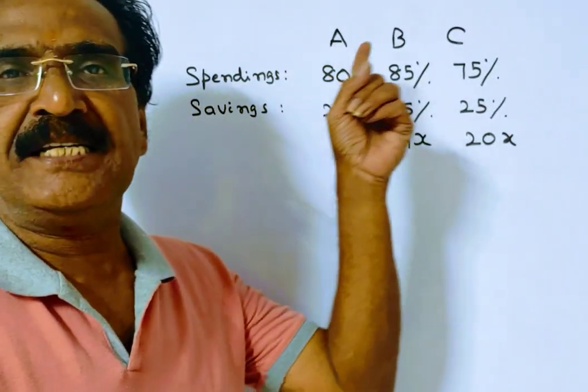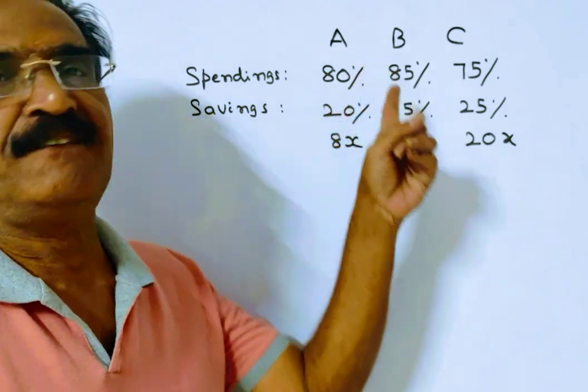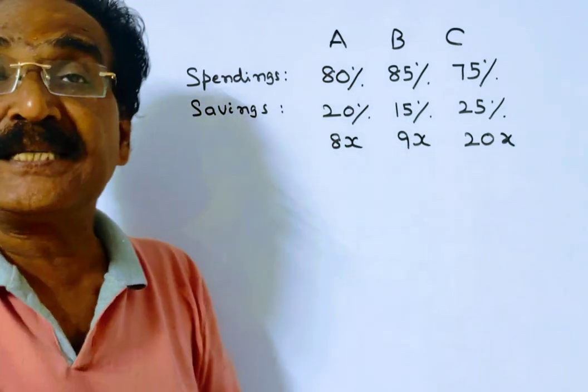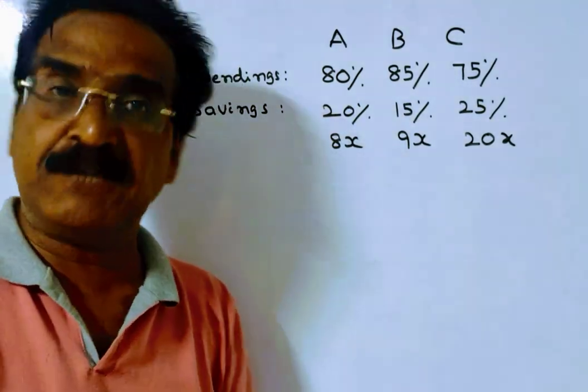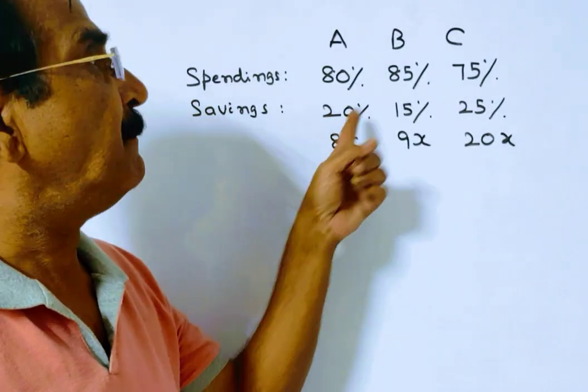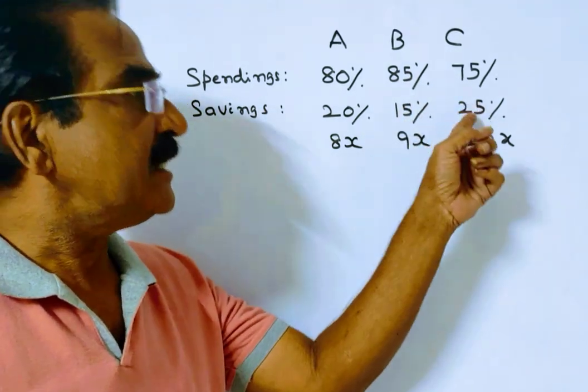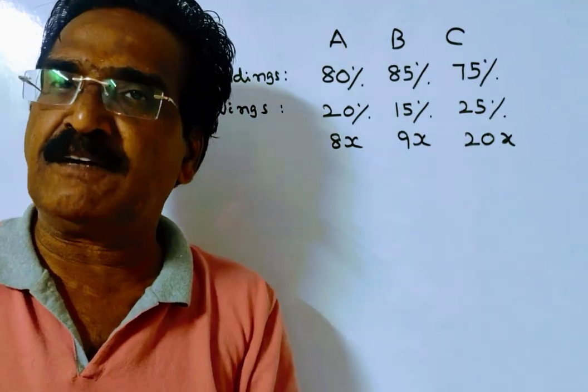See friends, A, B, C spend 80%, 85%, and 75% of their incomes. So A spends 80% of his income, means A saves 20% of his income. Similarly, B saves 15% of his income. C saves 25% of his income. These are saving percentages.